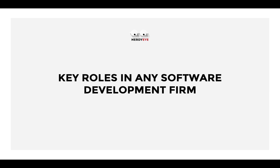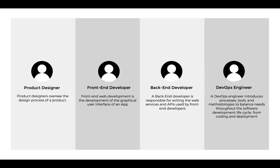So what I have here in front of me today is key roles in a software development firm. The first key role is the product designer. Product designers oversee the design process of a product — these are the UI/UX designers you see online. Once a particular software, app, or website needs to be built, the first people that work on that project are the product designers, and their main aim is to come up with the prototype of that application.